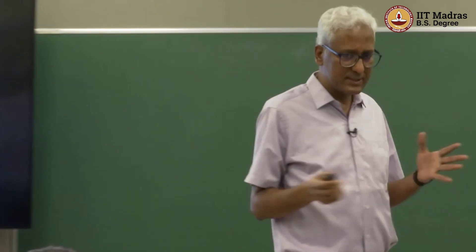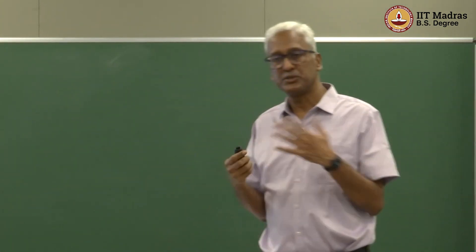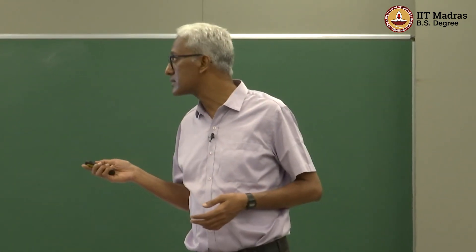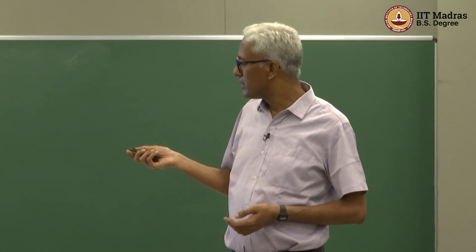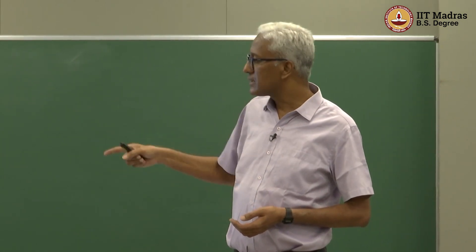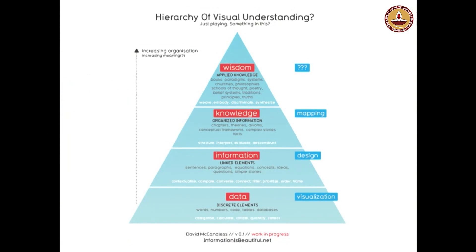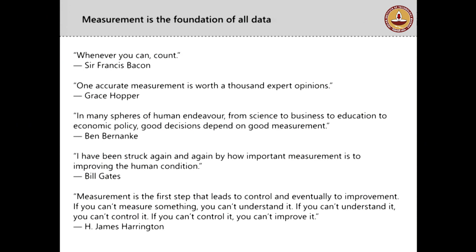The two frameworks are almost similar — McCandless is just using different words to explain this concept and is even unsure about how you achieve the higher levels. What is interesting is the processes he has identified are slightly different. At the bottom with data it is visualization; with information it is design; with knowledge it is about mapping; and with wisdom, he does not know.